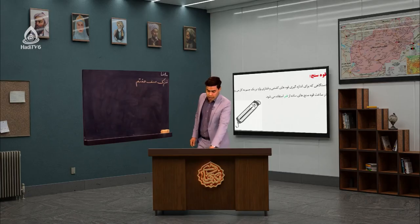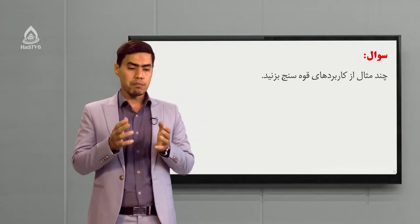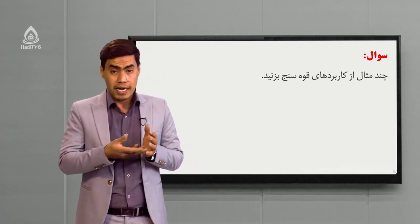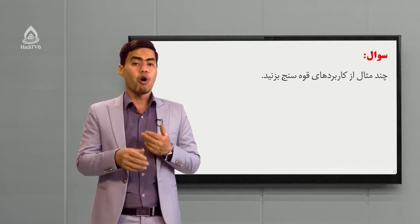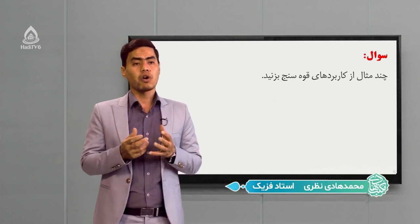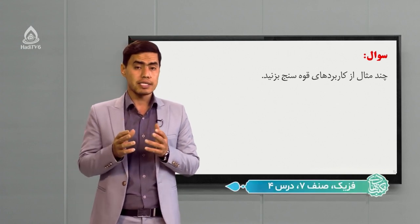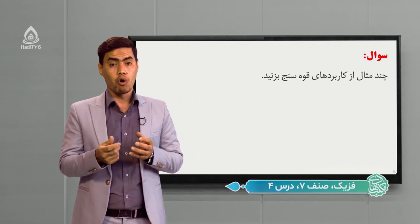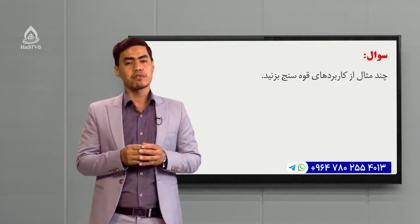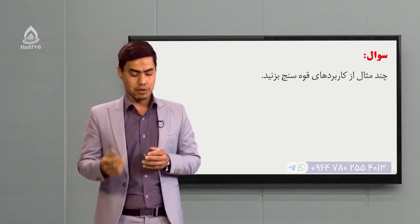یک سوال به عنوان کار خانگی: ما گفتیم برای اندازه‌گیری پایداری و مقاومت یک پل باید قوه‌های وارد بر آن را با قوه‌سنج‌های مخصوص اندازه‌گیری کنیم. شما به عنوان کار خانگی چند مثال ساده از کاربردهای قوه‌سنج در زندگی روزمره را تهیه کنید و به شماره 23964 780 255 14 برای ما روان کنید.